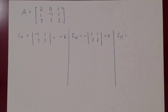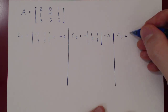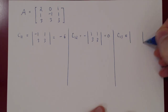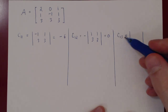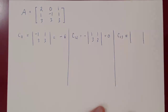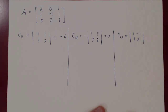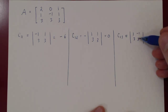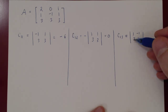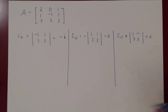And finally C13: 1 plus 3 is 4, which is even, so no negative sign. The determinant of the 2 by 2 matrix obtained after we delete the first row, third column, gives us 1, negative 1, 3, 3. The determinant is 1 times 3, minus negative 3, which is 3 plus 3 equals 6. We're a third of the way done — we have three cofactors.